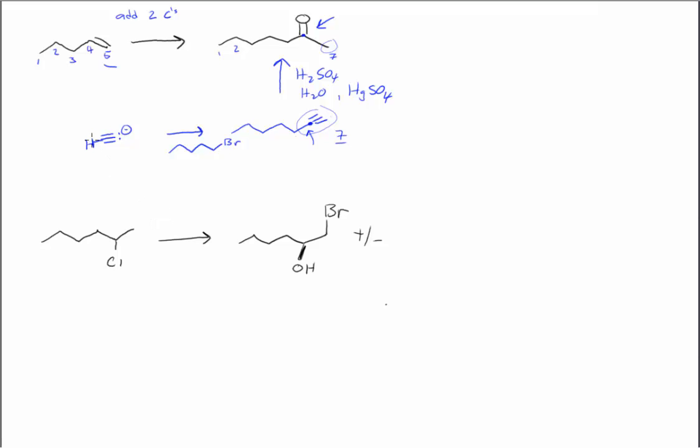We've taken acetylene. We've removed one of its hydrogens via the NaNH2 reagent. And now we can do an SN2 mechanism and produce our last intermediate.